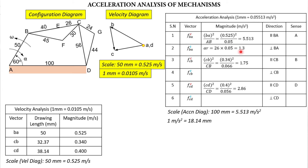We will talk about the directions in the acceleration diagram. Similarly, centripetal acceleration for links BC and CD can be calculated. For BC: V²/R = (0.34)² / 0.066 = 1.750 m/s². For CD: (0.4)² / 0.056 m/s². That's quite easy.